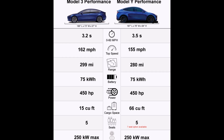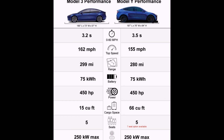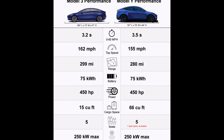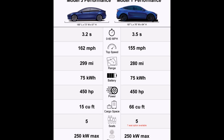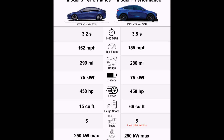The Tesla Model Y is a little bit bigger in every dimension, but the biggest difference is in height. The Model Y is 187 inches in length — only a 2-inch difference — but the height is 64 inches versus 57 inches for the Model 3. That's a 7-inch difference in height, which is quite significant.